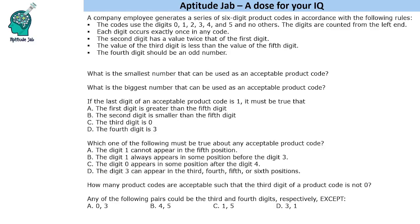Hello everyone, welcome to Aptitude Jab. This is a number puzzle. It says a company employee generates a series of six-digit product codes in accordance with the following rules. The codes use the digits 0 to 5, counted from the left end. Each digit occurs exactly once.